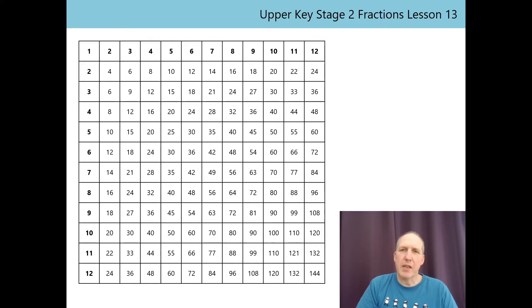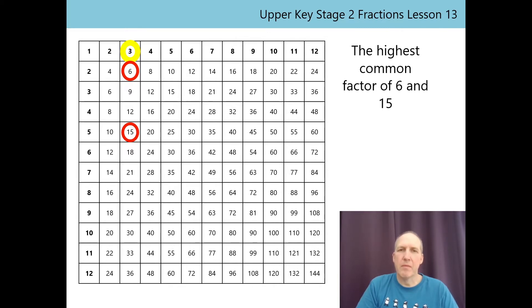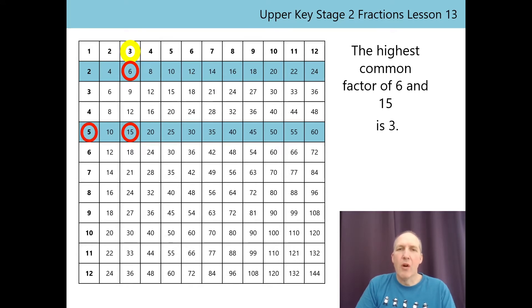Let's see how a multiplication square could help us. You've seen an image like this in a previous lesson. I put a red circle around our denominator 15 and another one around our numerator 6. The highlighted blue rows show fractions that are equivalent to 6/15ths. Along the blue rows are all the families of fractions that are equivalent. In the first column, we see that by dividing both 6 and 15 by 3 gives us the simplest fraction: 2/5ths.